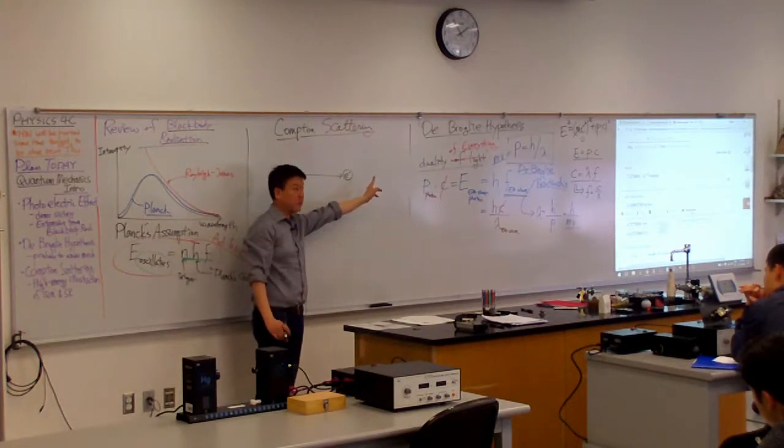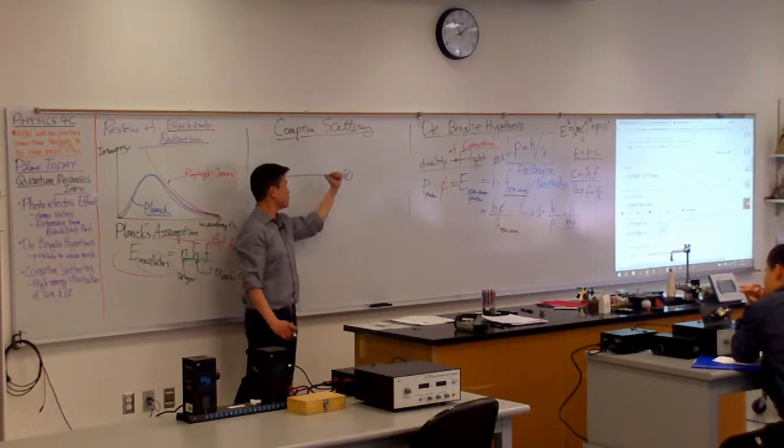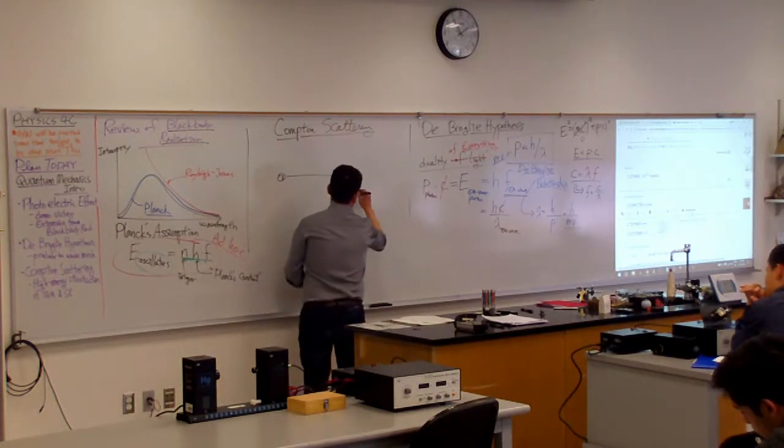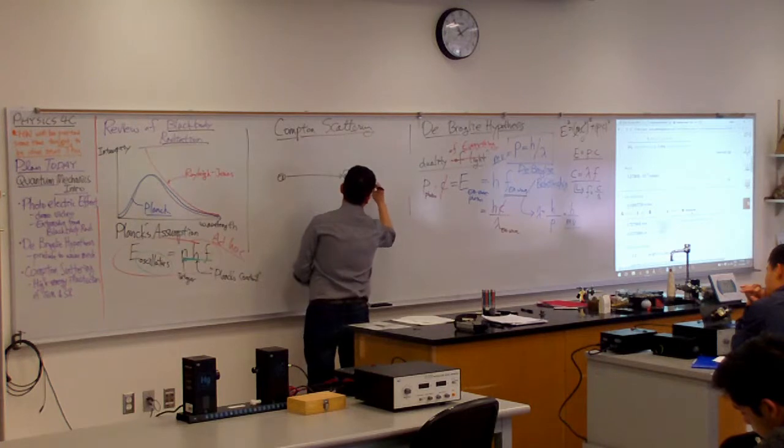Let's just do a simplistic case. Let's say it's a head-on collision. So after colliding, photon scatters straight backward, and electron goes straight forward.